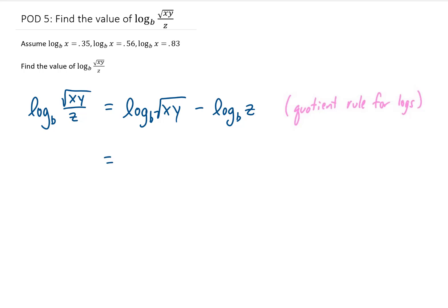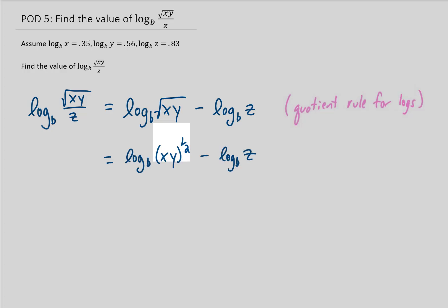But no matter which direction we go we need to remember that a square root is the same thing as a 1 half power. The next rule for logarithms that we need to remember is called the power rule for logarithms and that says that if we have a power on an argument inside of a logarithm like we do with this 1 half, we can take that 1 half and bring it out in front of the logarithm.